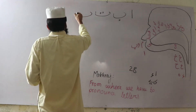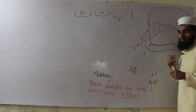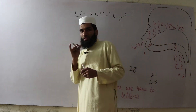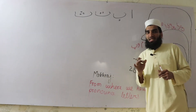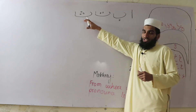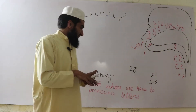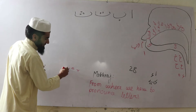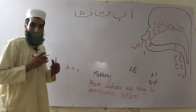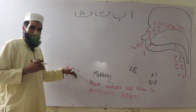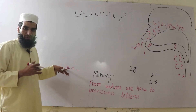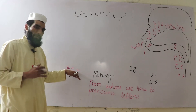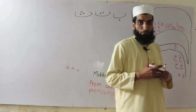Third is Tha. Its Makharaj is when the tongue is placed between the two teeth, pronounced very softly: Tha. Its recognition is three dots upside. So we recognize Ba (one dot downside), Ta (two dots upside), and Tha (three dots upside) by their dots.